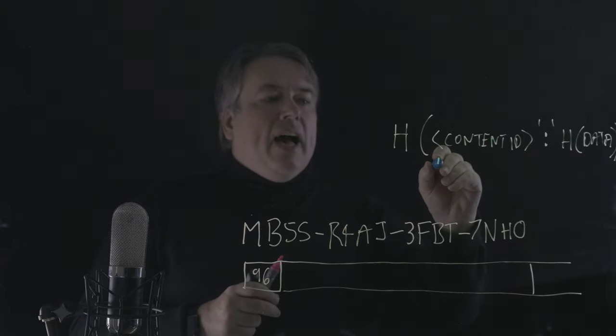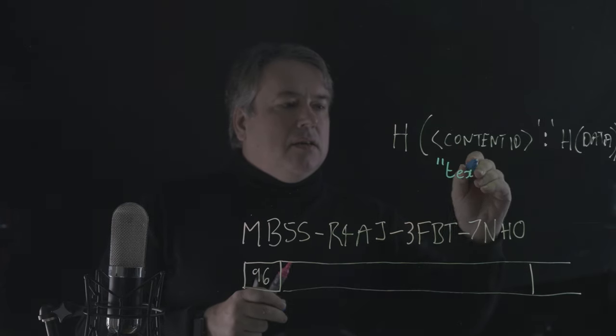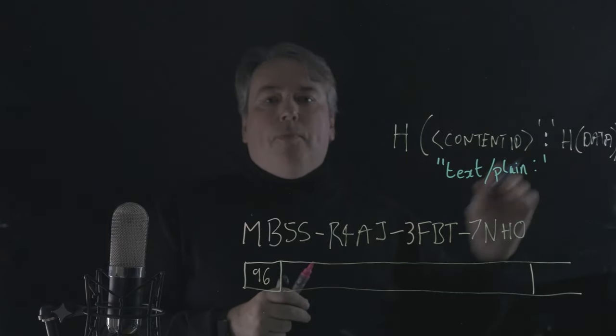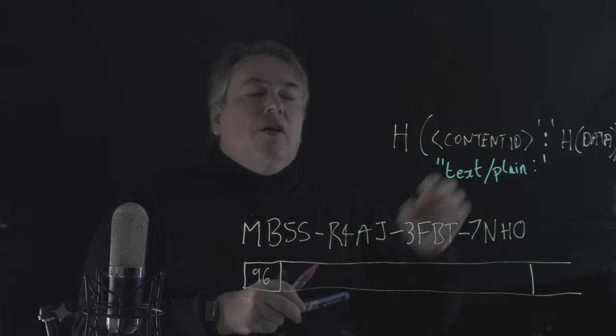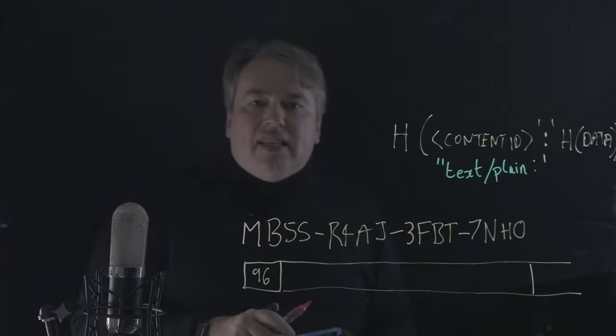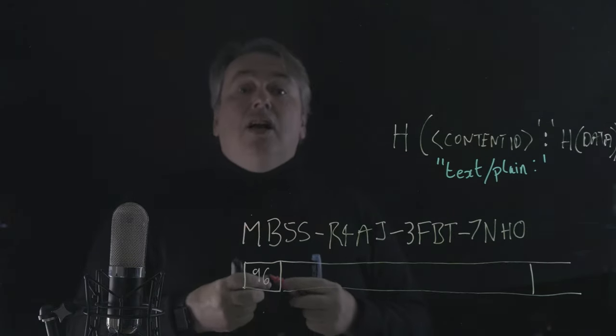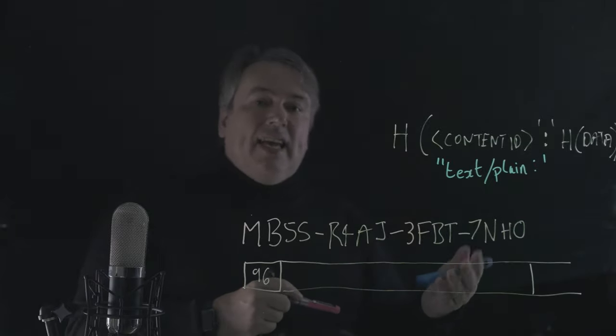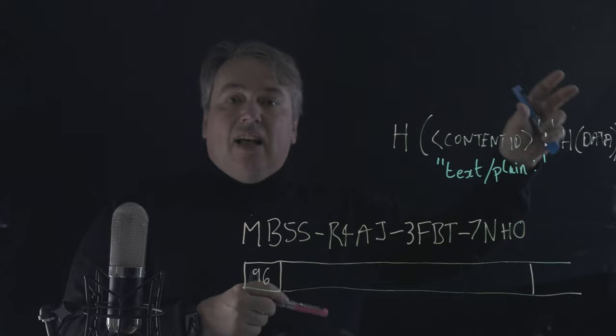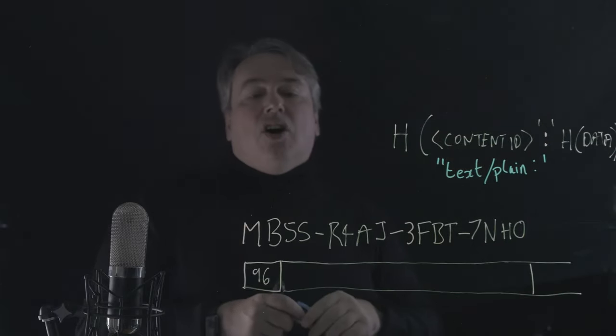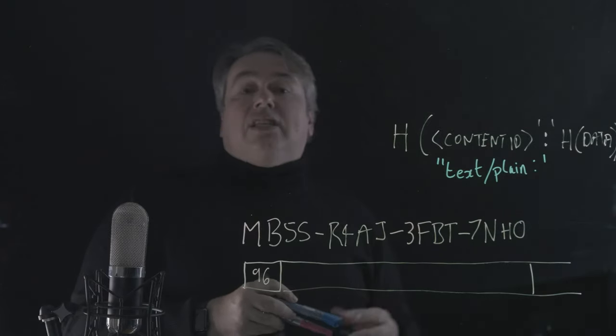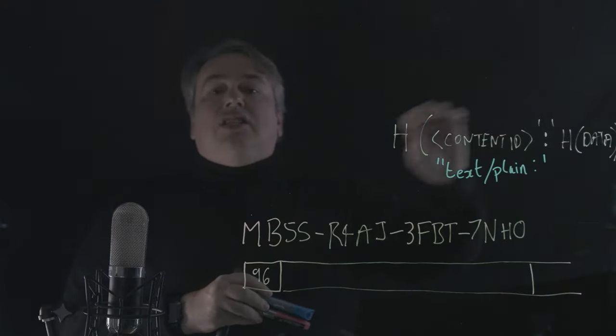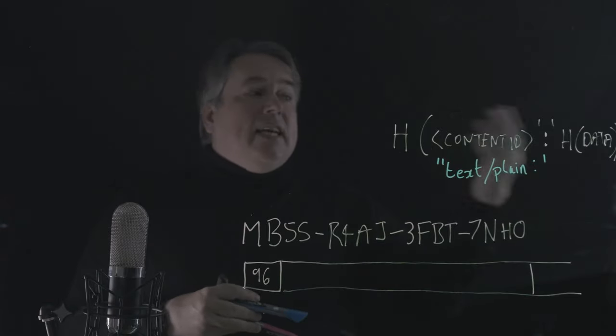A colon and the hash of the data. Okay. So a fairly simple construction. Why do we have this nested construction? Well let's see how, let's just instantiate it here. So say this is a piece of text, this piece will be text slash plane. And then followed by the hash of the data.